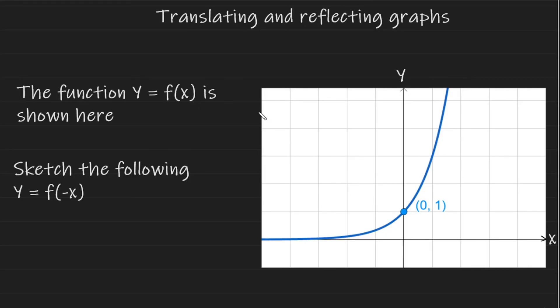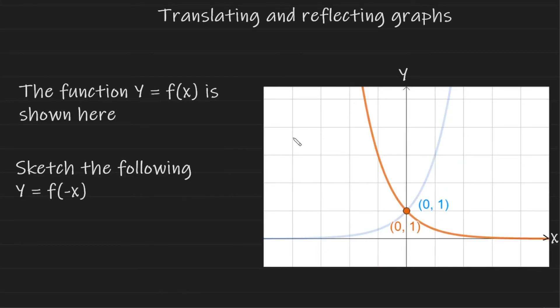So sketching this graph gives us the following. As you can see, the graph has been reflected in the y-axis. Our intersection point, however, remains the same.